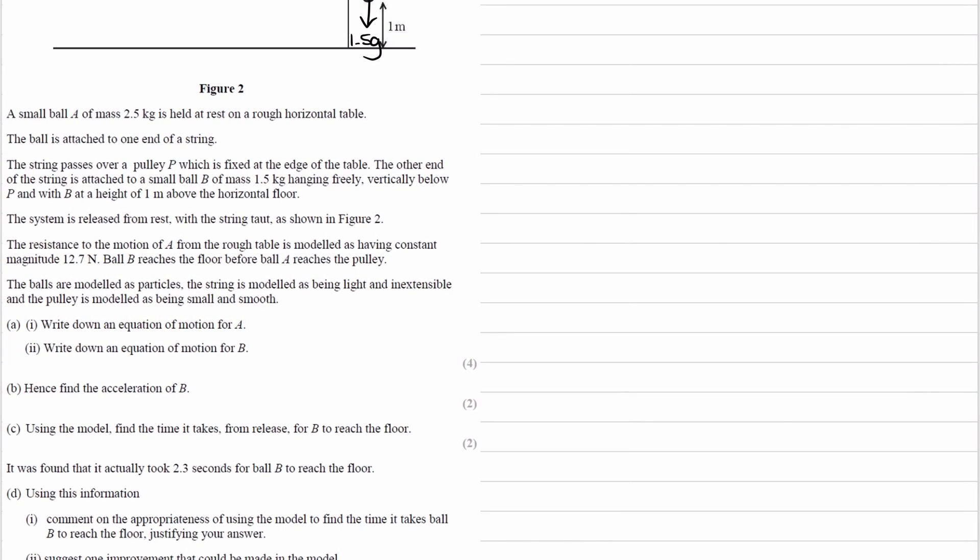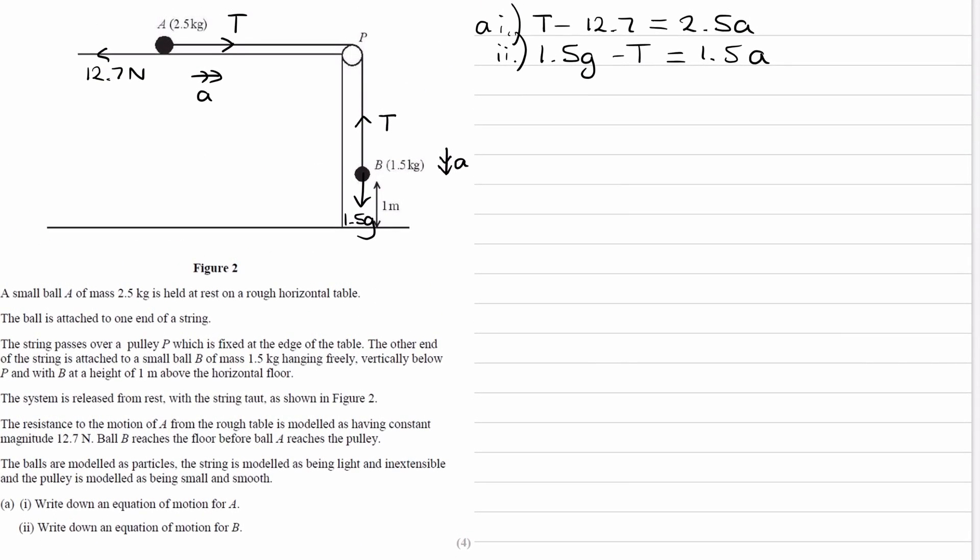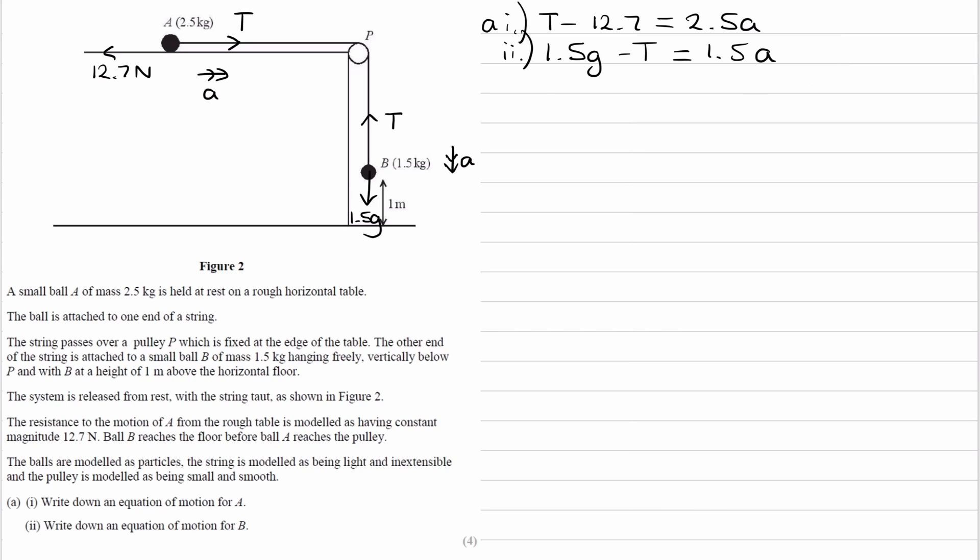For part B, it says hence find the acceleration of B. So to work out the acceleration, let's look at the equations that we have. We have these two equations here. We can solve them simultaneously to work out what A is. The easiest way is to simply add the two equations. So when we add them, the T that we have here and the minus T that we have there, T plus minus T will be zero, so they cancel out. And these two terms, that would become 1.5G minus 12.7. The right-hand side, these two added together, that will be 4A.